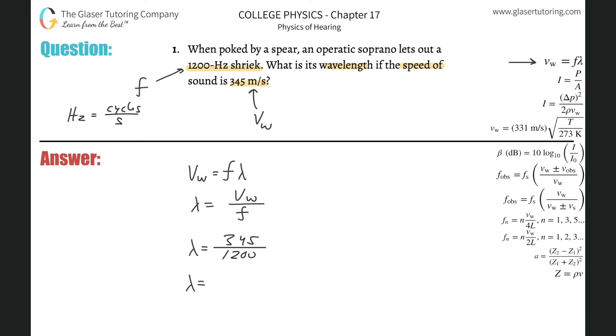So 345 divided by 1200, what do we get? We get 0.288 or so, considering sig figs, and that is in terms of meters.